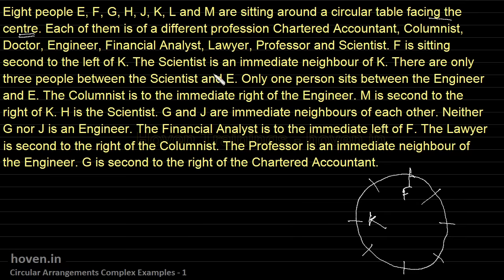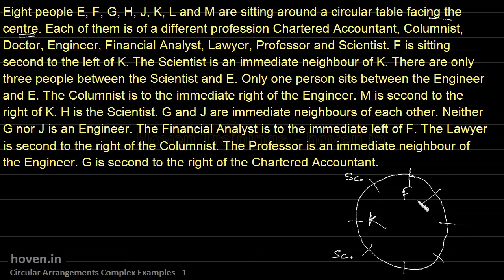The scientist is an immediate neighbor of K, which means the scientist will come at this spot or at this spot — this position or this position. Those that I am finalizing I am writing in the interior of the circle, and those still under consideration I am writing on the outside.